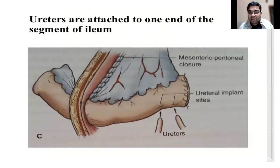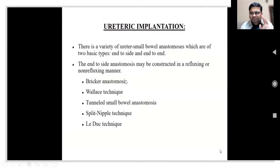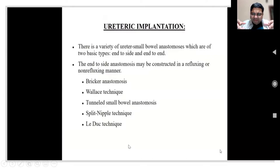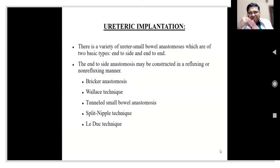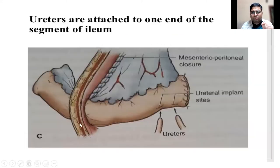The ureters are then anastomosed in what is called uretero-intestinal anastomosis - a very important step. There are two forms: refluxing and non-refluxing anastomosis. The Bricker anastomosis is a refluxing anastomosis. Tunnel techniques such as Le Duc and split nipple aim to carry ureters below the mucosa creating a non-refluxing mechanism, but these tunnel techniques don't work well long term due to obstruction.